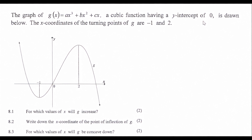Here's our first question for the evening. We have a cubic graph with a y-intercept, and the x-coordinates of the turning points are minus 1 and 2. That's already shown on the graph. Question 8.1: for which values of x will the graph increase?